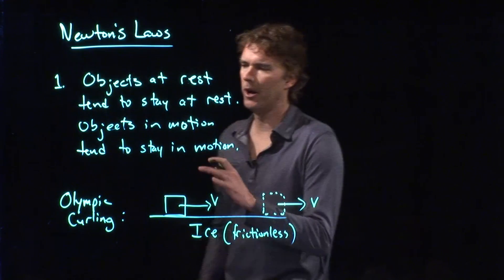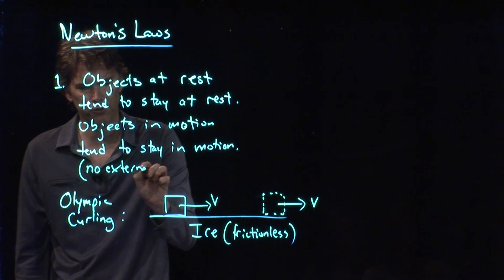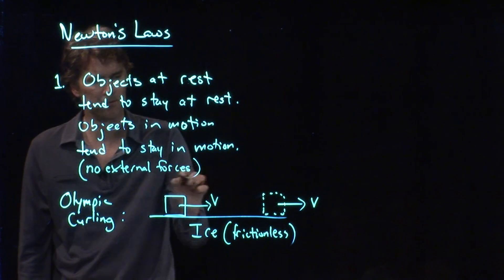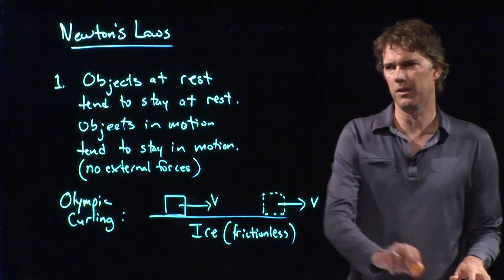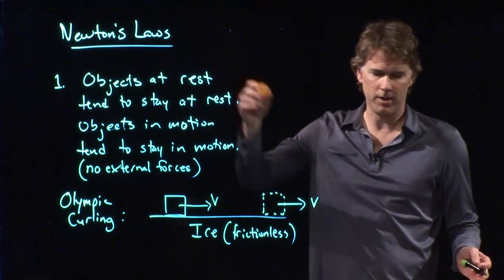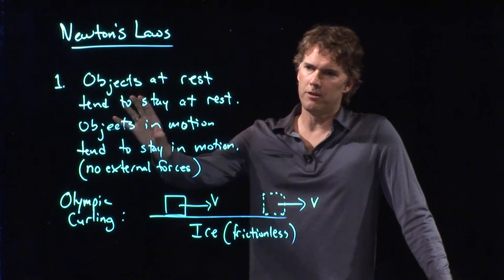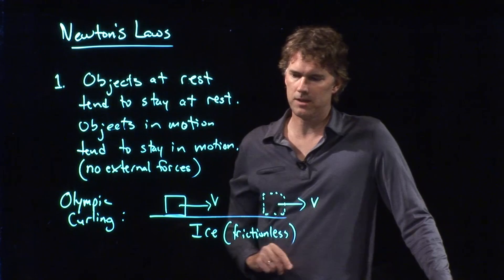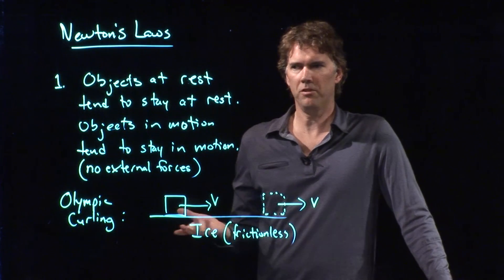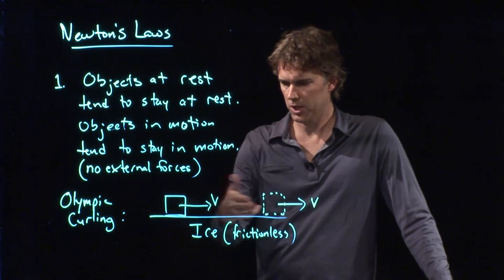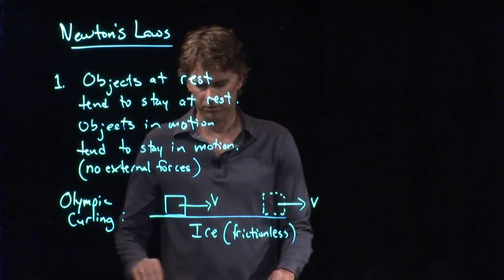And so really what we should add is this little caveat: no external forces. There's nothing that's trying to slow it down, nothing trying to speed it up. Obviously in the example of the ping pong ball dropping, we do have an external force — we have gravity pulling it down. So Newton's first law is really: no external forces, objects in motion tend to stay in motion. If I put that stone on the ice and leave it at rest, it will stay at rest. If I push it and it gets velocity v, it will keep velocity v for a long time. That's Newton's first law.